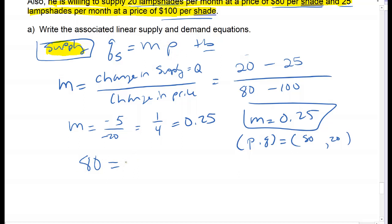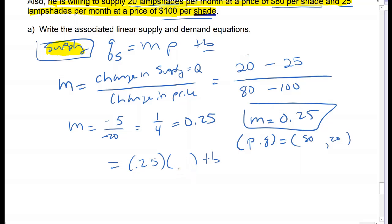Slope is 0.25 and quantity supplied is 20. So I'm going to plug them in. Quantity is 20, price is 80. So 20 equals 0.25 times 80 plus B. It's really easy to flip price and quantity around, so make sure you're very careful when you plug those in.